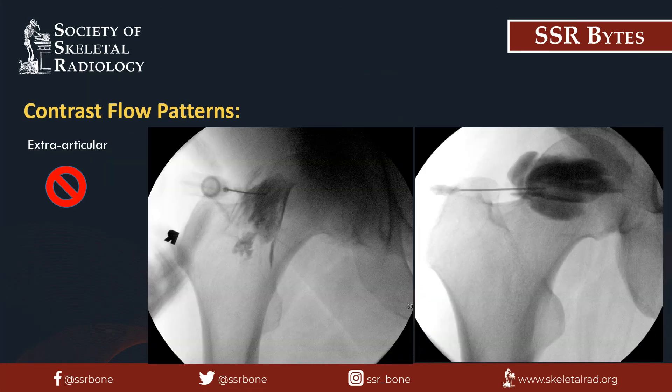Here are some examples of abnormal flow patterns where the contrast pools at the tip of the needle. If you see this, it is highly unlikely that the needle is within the joint space. The needle may be embedded in the joint capsule or may be completely extra-articular, possibly within the adjacent musculature or soft tissues. Resistance may be felt when trying to inject contrast compared with intra-articular injections, raising your awareness that you may not be in the joint.